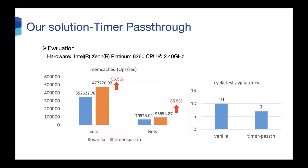Another test — the cyclictest, which measures scheduling latency — also shows improvement after using our pass-through timer.